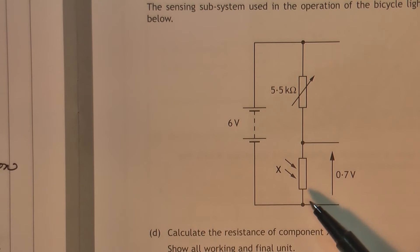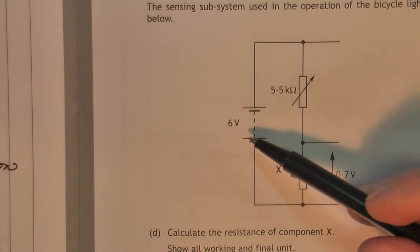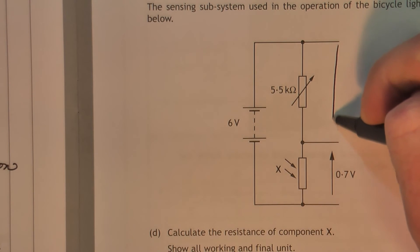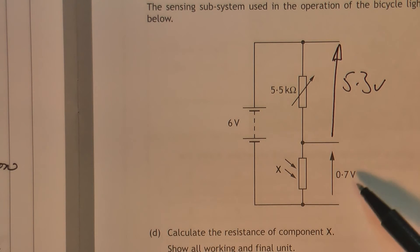This question's asking to calculate the resistance of the LDR. So if we look at what we're told, first of all, we know that's 0.7 volts. We know the supply is 6 volts. So of the 6, we've used 0.7 here. So that must be 5.3 volts. 0.7 plus 5.3 equals the supply.